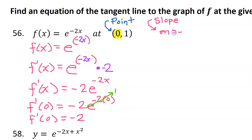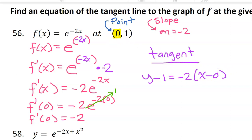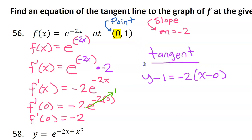I'll write m equals negative 2. Now we are ready to write the equation of the tangent line using point-slope form. We write y minus y1 is equal to the slope times x minus x1. And that's it — this is the equation of our tangent line.